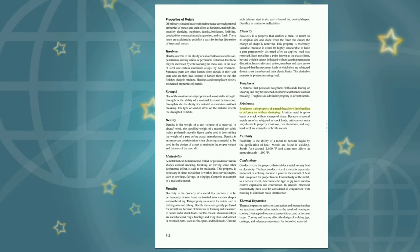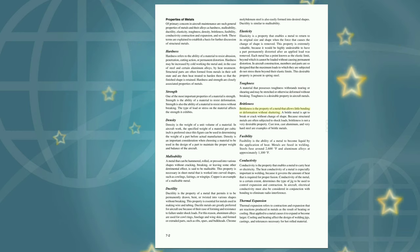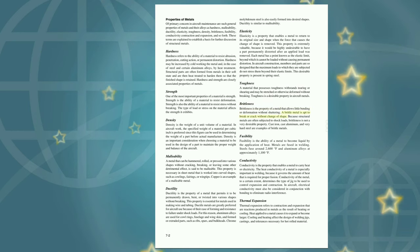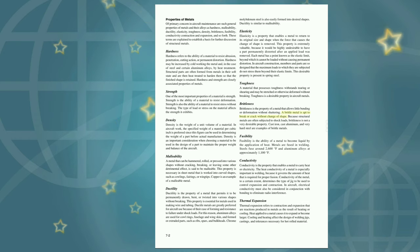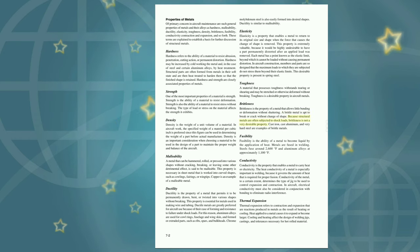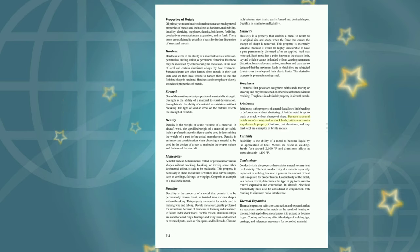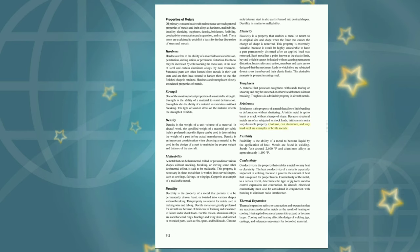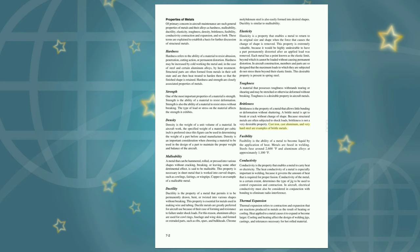Brittleness is the property of a metal that allows little bending or deformation without shattering. A brittle metal is apt to break or crack without change of shape. Because structural metals are often subjected to shock loads, brittleness is not a very desirable property. Cast iron, cast aluminum, and very hard steel are examples of brittle metals.